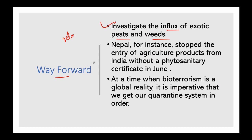For example, Nepal - agricultural products going from Nepal to India did not get a Phytosanitary Certificate in June. This was partly because India was dealing with the Acute Encephalitis Syndrome outbreak in Bihar at that time. As global trade and global movement increase, countries must be very serious about alien pests and microbes - one concern even being bioterrorism.